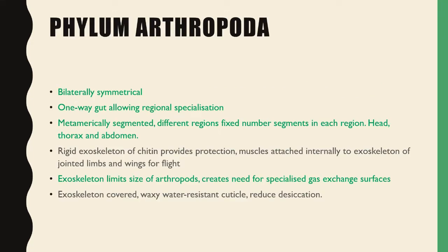The next phylum is Arthropoda, which are bilaterally symmetrical with a one-way gut allowing for regional specialisation. They are also metamerically segmented, meaning different regions have a fixed number of segments — for example, head, thorax, and abdomen. They have a rigid exoskeleton of chitin providing protection, with muscles attached internally to the exoskeleton of jointed limbs and wings for flight. The exoskeleton limits airflow, creating the need for specialised gas exchange surfaces, and the exoskeleton is covered in a waxy, water-resistant cuticle to reduce desiccation.